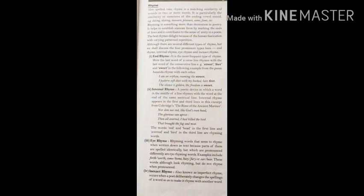Next is eye rhyme — rhyming words that seem to rhyme when written down as text because parts of them are spelled identically, but are pronounced differently. For example, ford and word. The spellings look similar in the first letter, but when you say them, they do not rhyme. These words look rhyming but do not rhyme when pronounced. Then the last type is inexact rhyme, also known as imperfect rhyme — it occurs when a poet deliberately changes the spellings of a word to make it rhyme with another word.